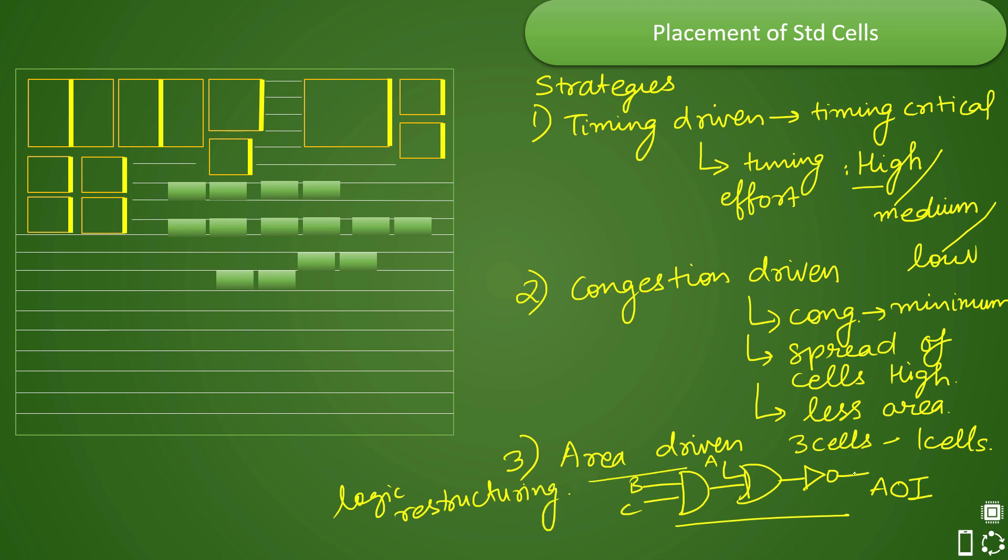So area recovery is done in this particular manner. One last option that is available is your power driven strategy. In the power driven strategy, you are telling the tool to not use leaky cells. When you use leaky cells, what happens is you have more leakage power dissipation. You are trying to optimize the power.